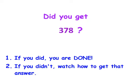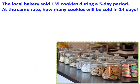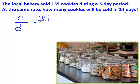Did you get 378? If you did, you're done. But if you didn't, watch how to get that answer. I look at this question, and I see that I am comparing cookies to days. And I look back up into the problem, and it says, I sold 135 cookies in 5 days. This is the first ratio. This 14, this is in the second ratio. And it goes on the bottom row, the day row. I'm looking for the top number.